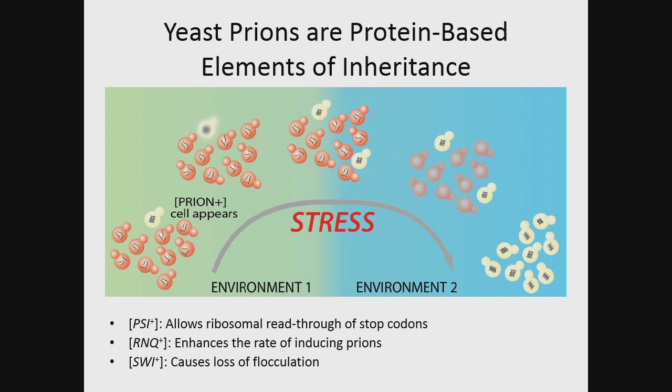Here I'm showing three functions that different prions have in cells. The psi prion allows for the read-through of stop codons. The rink prion enhances the rate of inducing other prions — this rink prion is found in most lab strains; in fact, W303 and BY4741 and BY4742 both harbor the rink prion. The SWI prion is a different protein that forms a prion and has recently been shown to cause the loss of flocculation in yeast.